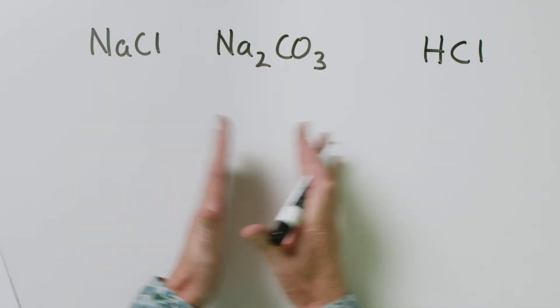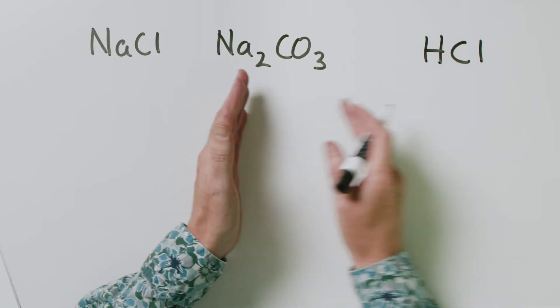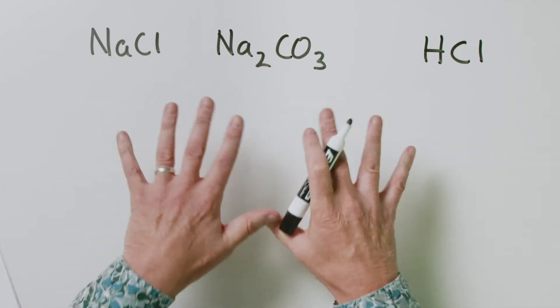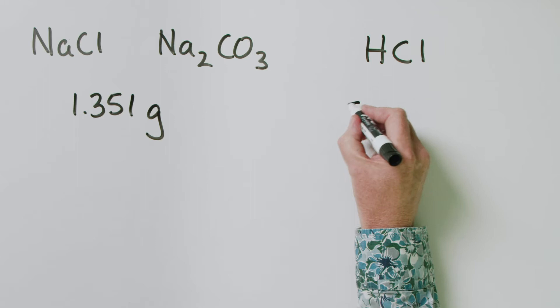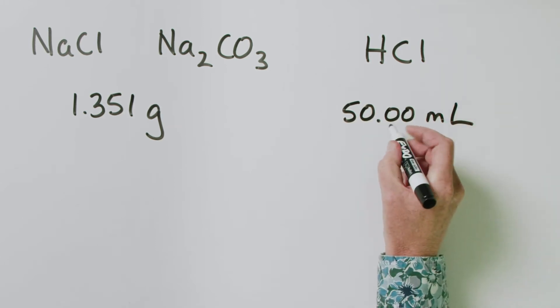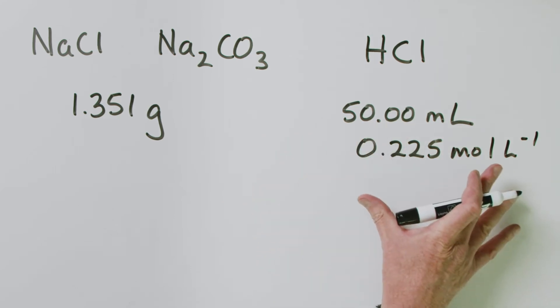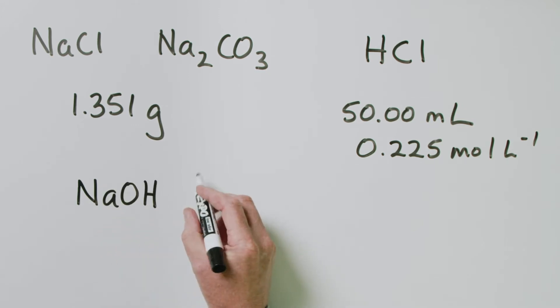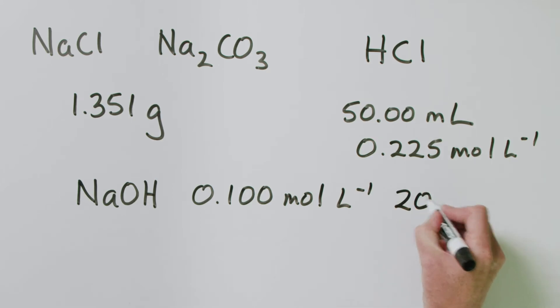So that's essentially the guts of it: we take the mixture, react it with excess HCl, then react that excess HCl with sodium hydroxide, and from that, using stoichiometric principles, we can figure out how much of each compound was in the mixture. Let's add some numbers: we take 1.351 grams of the mixture; HCl — 50.00 mL at a concentration of 0.225 mol/L; sodium hydroxide at 0.100 mol/L, requiring a volume of 20.74 mL.